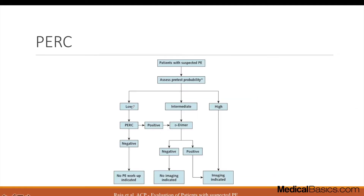Looking at the diagram, if a patient is low risk based on history and their PERC is negative, you do not need to do any additional PE workup. However, if they are PERC positive, then we need to start thinking about getting a D-dimer and potentially imaging.